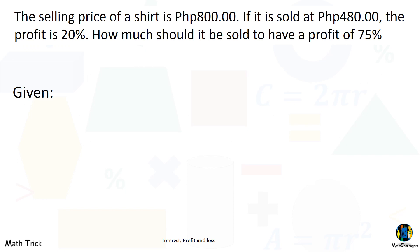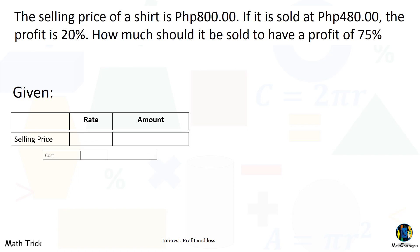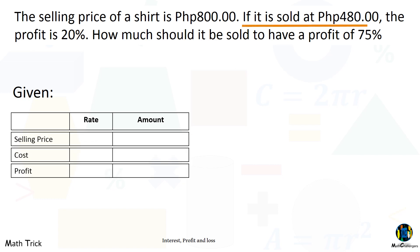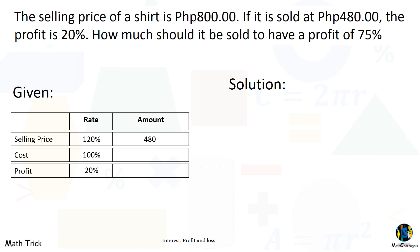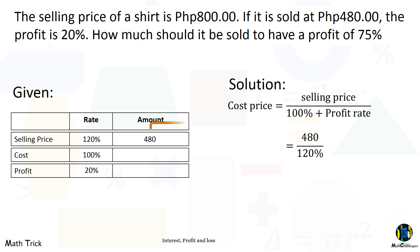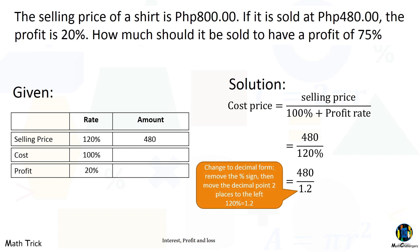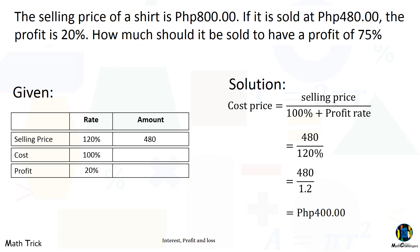To efficiently answer the problem, fill the following table. Analyze the problem: if it is sold at 480 pesos, the profit is 20%. Take note that the cost is always 100%. So if the cost is 100% and there is a profit of 20%, then the selling price is 120%. Using the table, we can now solve the problem by first finding the cost of the shirt. The cost price can be computed by dividing the selling price by the sum of 100% and the profit rate: 480 divided by 120%, or 480 divided by 1.2. The cost price of the shirt with 20% profit is 400 pesos.